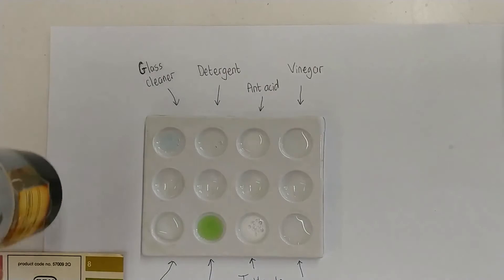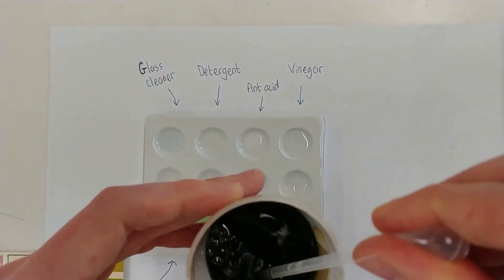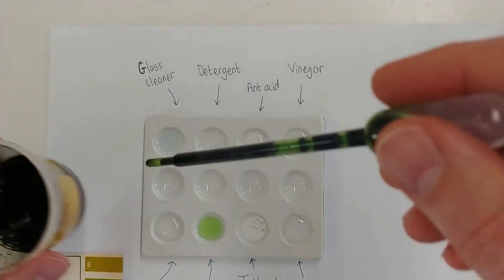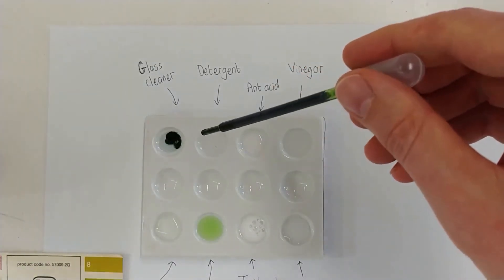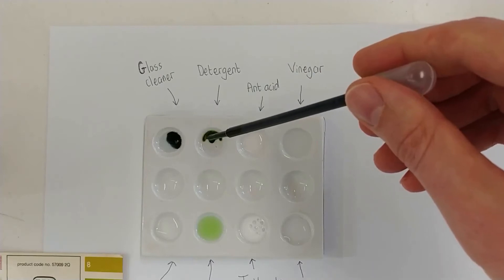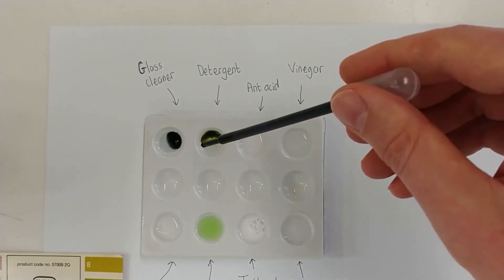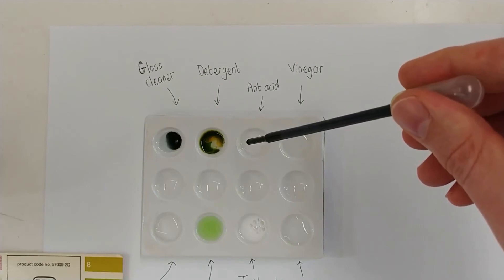Ah, at last, he's finished. And now the Universal Indicator solution, which as you can see has a very deep green color. And here, a few drops go into the glass cleaner. The detergent. Yes, that's right, just one more.